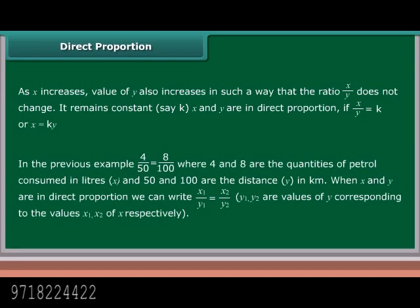In the previous example, 4/50 = 8/100, where 4 and 8 are the quantities of petrol consumed in liters (X), and 50 and 100 are the distances (Y) in kilometers. When X and Y are in direct proportion, we can write X₁/Y₁ = X₂/Y₂, where X₁, X₂ are values of X and Y₁, Y₂ are the corresponding values of Y.